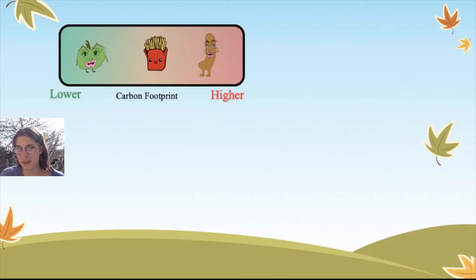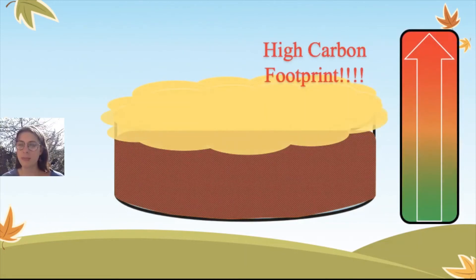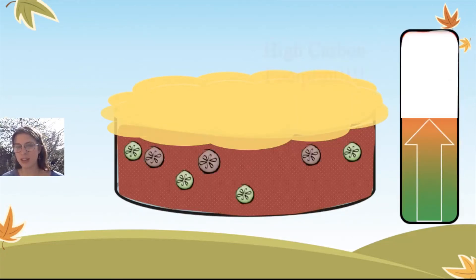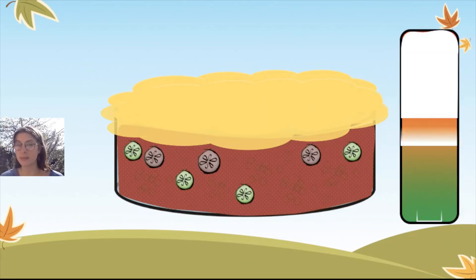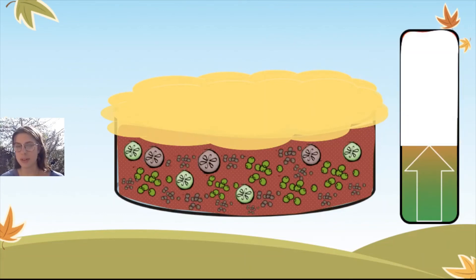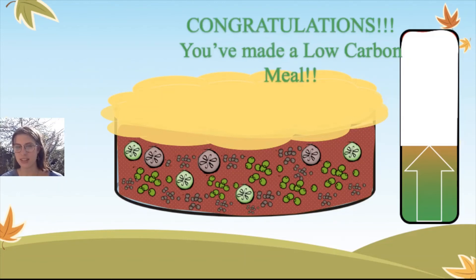Let's take a shepherd's pie. Maybe you've got your beef and your mash. That's actually quite a high carbon footprint, as beef is a big contributor. But this is where we get to have some fun and try out some new things. If we add in some more veg, maybe even some beans or some lentils, we can lower the carbon footprint and still have a delicious beef and veg shepherd's pie.